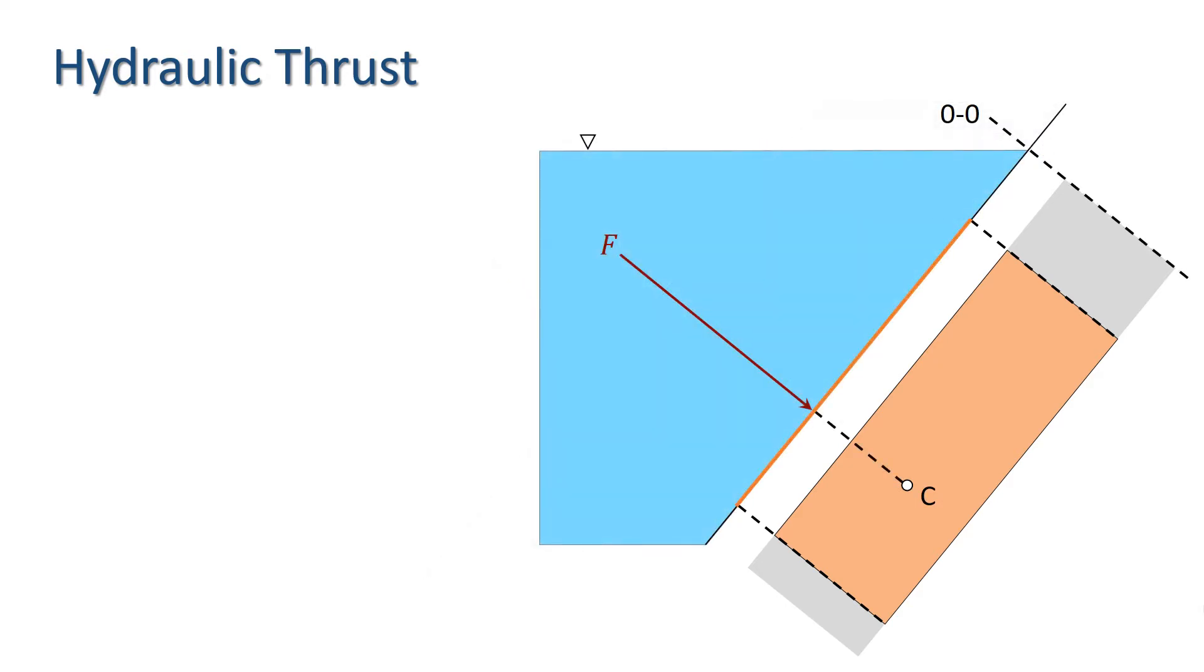We do, of course, know what the pressure distribution looks like over the surface. The pressure increases linearly with pressure head with gradient rho times G. Thus, we will have a trapezoidal pressure diagram, as shown here.